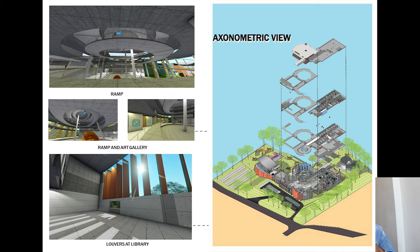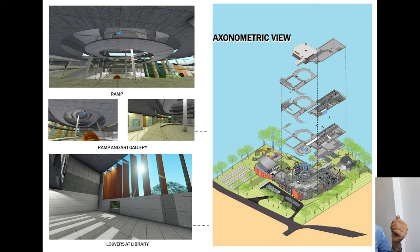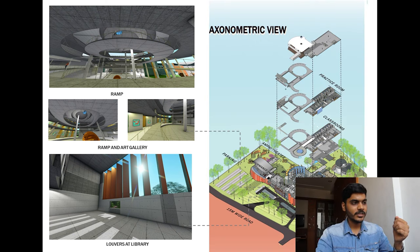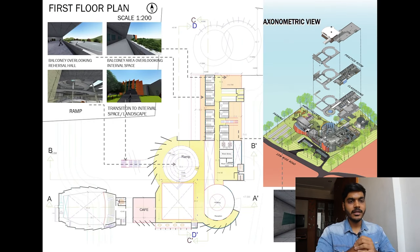I created an axonometric view of all the floors showing exactly which area is going where — it would also be helpful for the jury to see. This is a view of the ramp and art gallery. I just added a glass golden glass ball because I found it interesting — something extra. There are also louvers and a library.